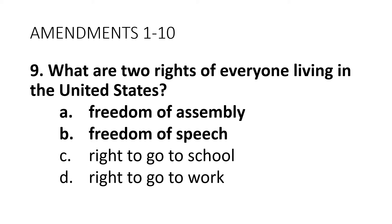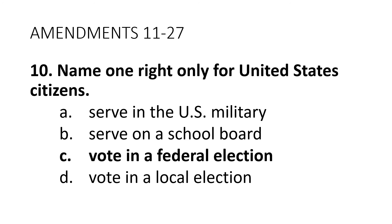Question 9: What are two rights of everyone living in the United States? Answer A: Freedom of assembly. Answer B: Freedom of speech. You can also add freedom of expression, freedom to petition the government, freedom of religion, and the right to bear arms. Question 10: Name one right only for United States citizens. Answer C: Vote in a federal election. You can also add run for federal office. But remember, you only have to give one answer for these questions.